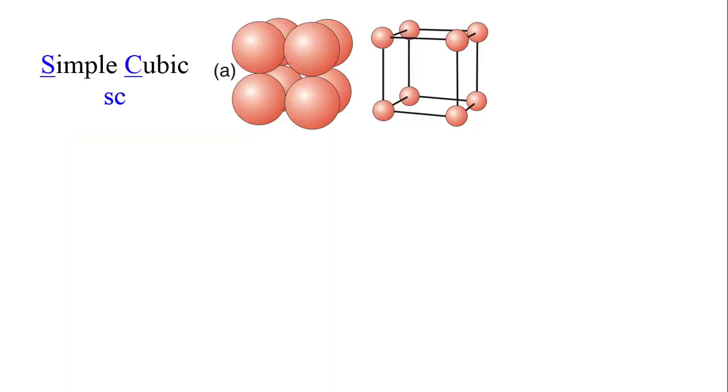The simple cubic unit cell, abbreviated SC, is shown here in two different ways. On the left is the space-filling model with the atoms modeled as touching spheres. It may be easier to see the cubic arrangement of atoms in the ball-and-stick model on the right.